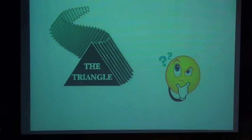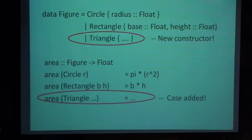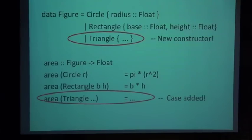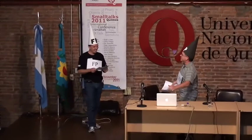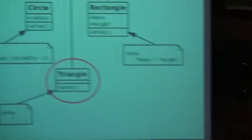But what happens if you have to add a new figure, like triangle? Well, you have to modify the function — create a new constructor for the triangle and modify the area function to handle that constructor. You see? Object orientation is better — you don't have to modify the design, only add a new subclass, and it has its own area method. And that's all. No changes.